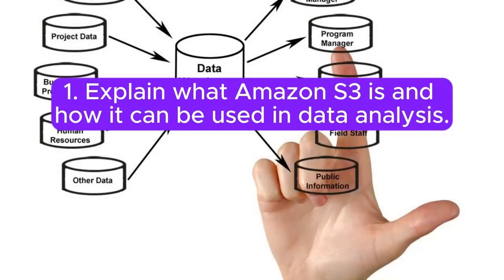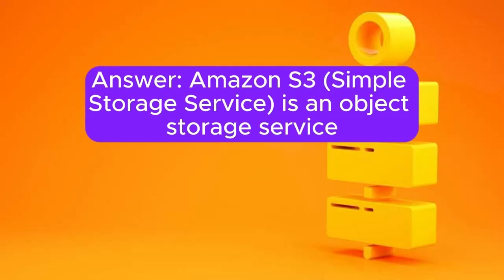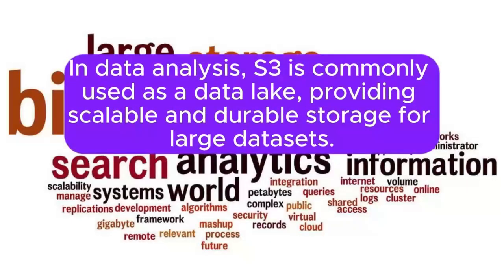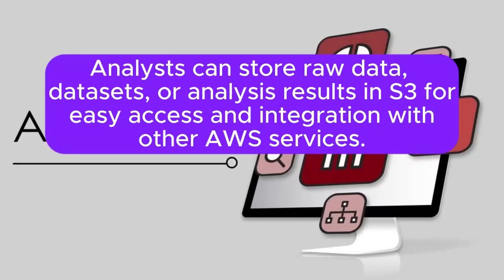1. Explain what Amazon S3 is and how it can be used in data analysis. Answer: Amazon S3 (Simple Storage Service) is an object storage service that allows users to store and retrieve any amount of data at any time. In data analysis, S3 is commonly used as a data lake, providing scalable and durable storage for large datasets. Analysts can store raw data, datasets, or analysis results in S3 for easy access and integration with other AWS services.